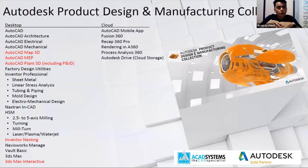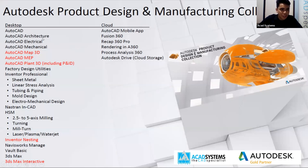AutoCAD comes with seven tool sets: AutoCAD Fold, AutoCAD Architecture, AutoCAD Electrical, AutoCAD Mechanical, AutoCAD Map 3D, AutoCAD MEP, and the last one is AutoCAD Plant 3D including P&ID. We also have AutoCAD LT.